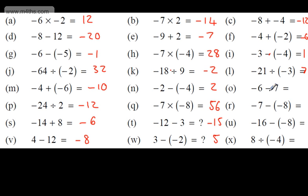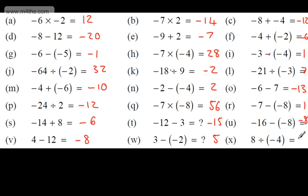Negative 6 subtract 7 gives negative 13 — if it's negative 6 outside and it goes down by 7 degrees, it's now negative 13. Negative 7 minus negative 8: these two signs mean we're going to be adding, giving positive 1. Negative 16 subtract negative 8: we add 8, giving negative 8. 8 divided by negative 4: one positive, one negative; 8 divided by 4 is 2, so this gives negative 2.